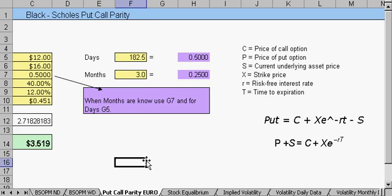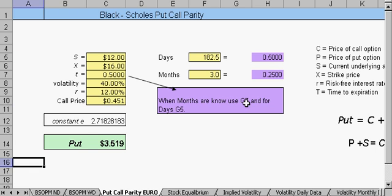So if we have the call value which we could probably calculate here, here's the call value. Here's our legend.